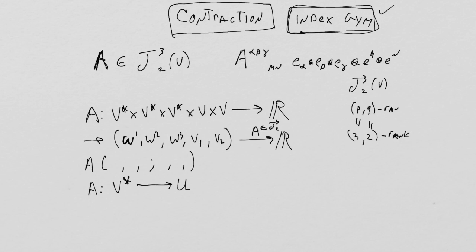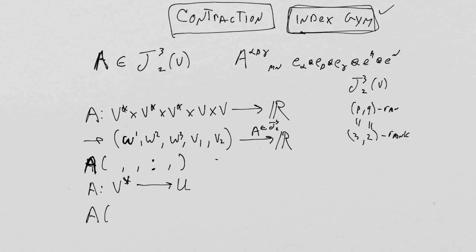Think of A as a machine — the Misner, Thorne, and Wheeler method — that takes three vectors and two covectors and gives you a real number. If I fill one covector slot, say omega, and leave the others blank, that object is waiting for a vector, a vector, a covector, and a covector. So that thing is an element of a rank-2,2 tensor product space.